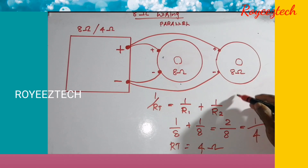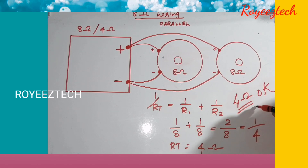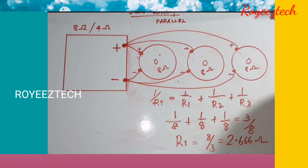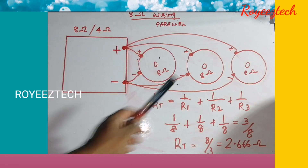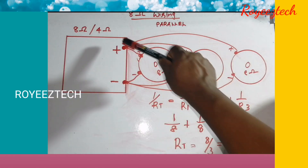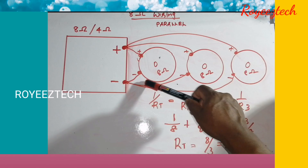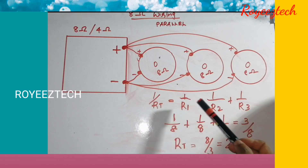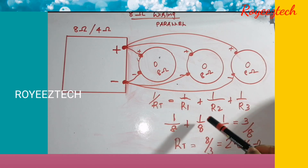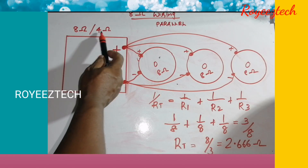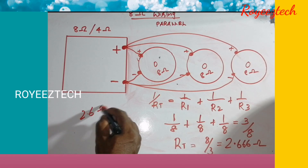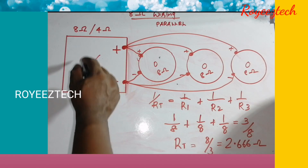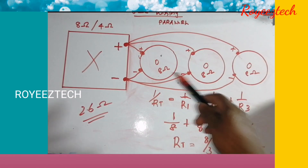If we connect a 4 to 8-ohm output impedance amplifier to 3 speakers in parallel, all at 8 ohms, the total resistance is 1 by R1 plus 1 by R2 plus 1 by R3, which equals 1 by 8 plus 1 by 8 plus 1 by 8, giving approximately 2.66 ohms.